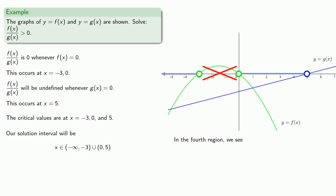And finally, if we take a look at this last interval from five onward, we see that f of x is negative. And g of x is positive. And so our quotient is going to be negative. And so we exclude this last interval.